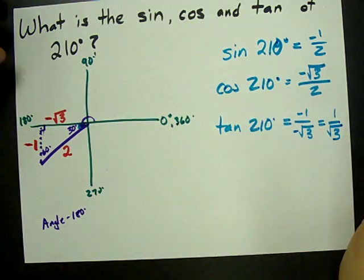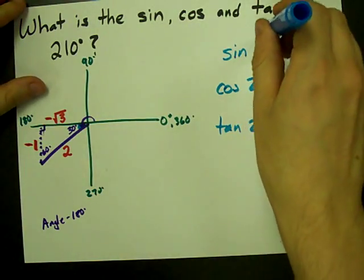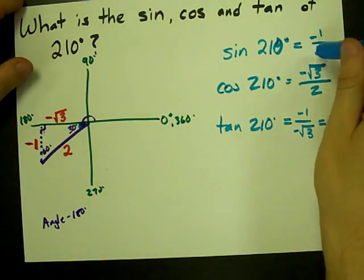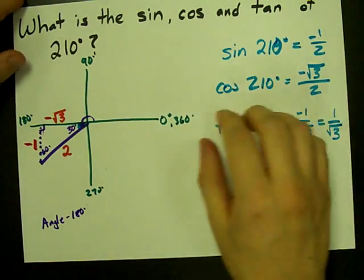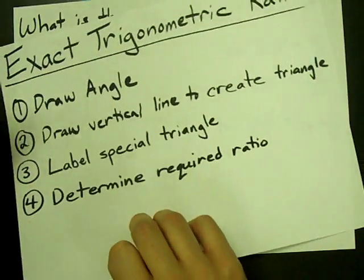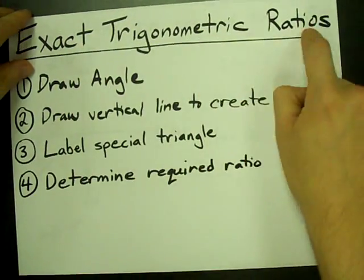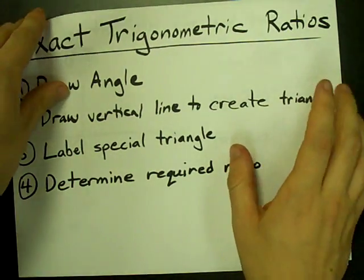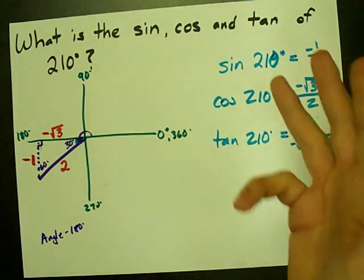What you'll find is that if you type sine 210 degrees into your calculator, you'll get negative 0.5. And this is the best and fastest way, in my personal opinion, to get exact trigonometric ratios for any special angle. Best of luck.